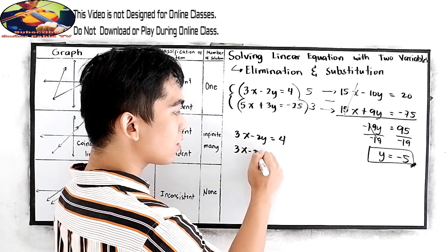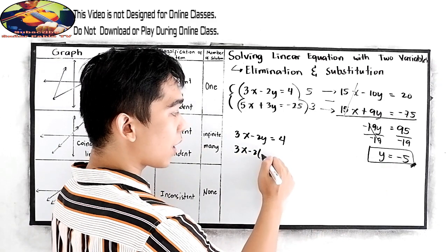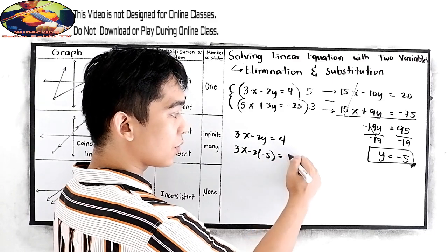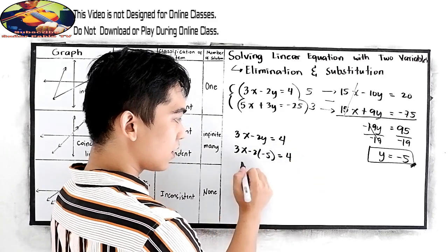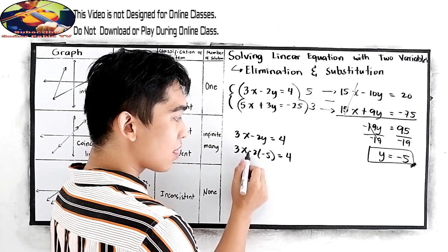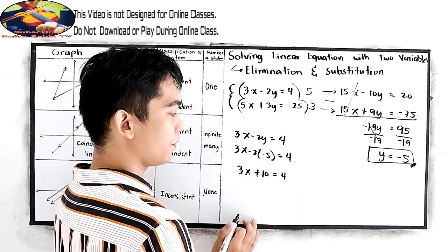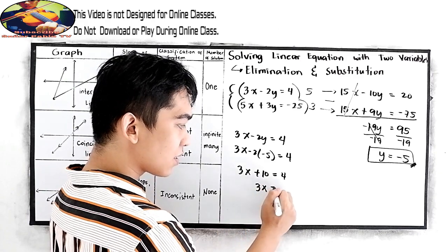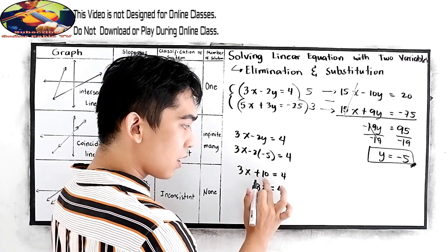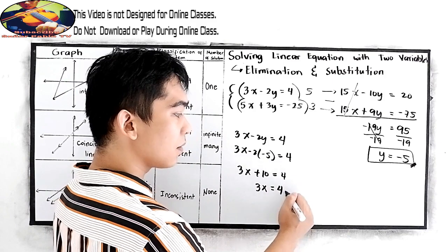So, 3x minus 2 times our y is negative 5 is equal to 4. So, we have 3x, negative 2 times negative 5 is positive 10, is equal to 4. So, 3x is equal to 4, addition property of equality, minus 10.